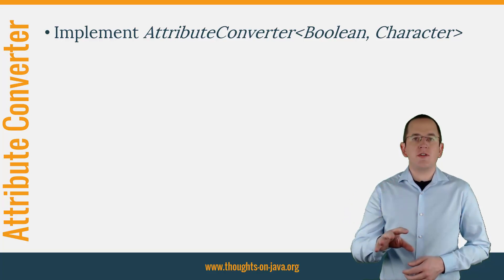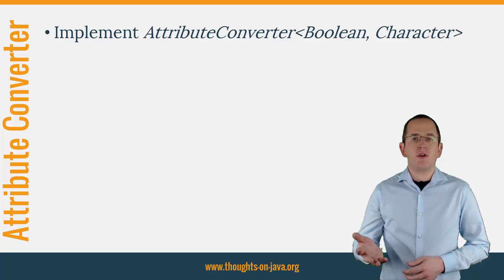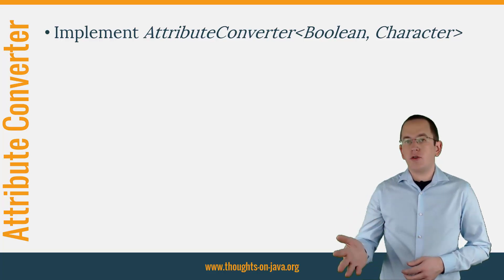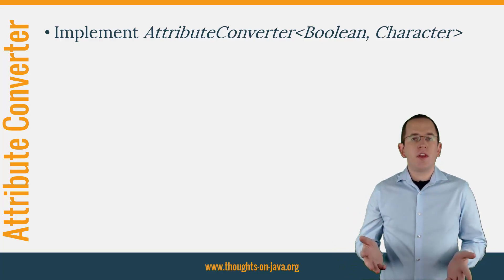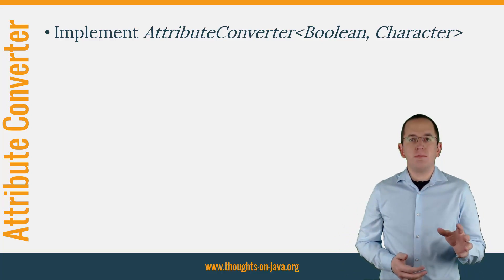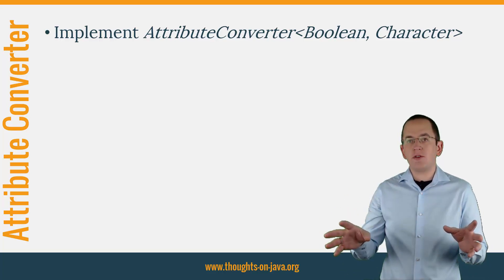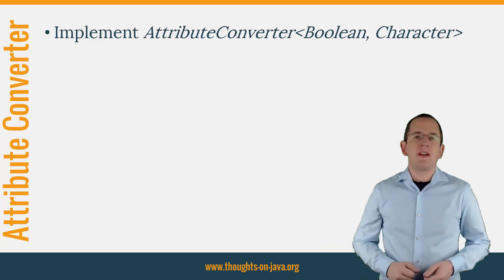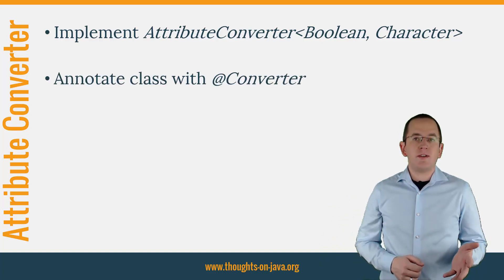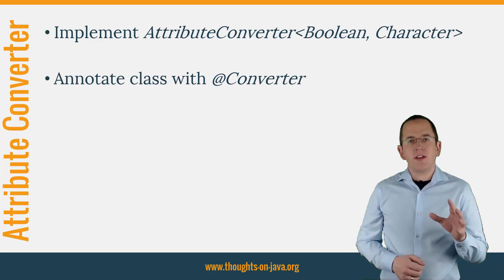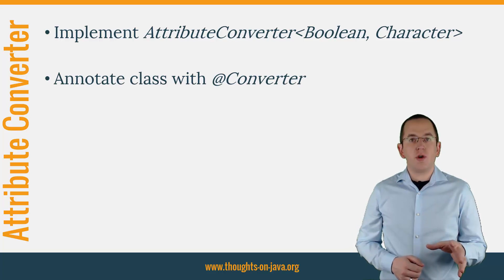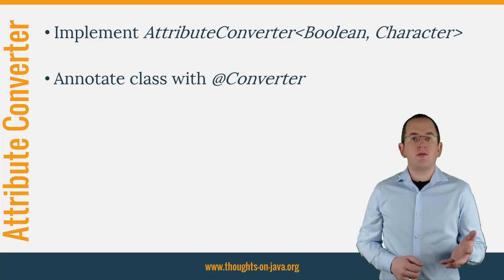The implementation of such a converter is pretty easy. You just need to implement the AttributeConverter interface with its methods convertToDatabaseColumn and convertToEntityAttribute. Within these methods, you implement the conversion of the Boolean object to a character object and vice versa. You also need to annotate your class with a Converter annotation. This registers the attribute converter and you can use the AutoApply attribute to define if the converter shall be used for all attributes of the converted type.